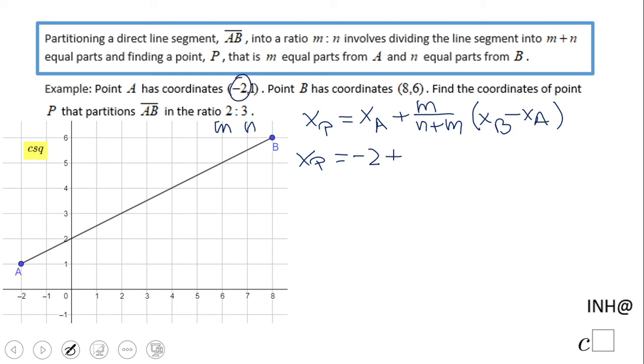So let's see what we get. XP equals XA is -2, plus—this one—M is 2 over 2 plus N, which is 5. Then we have XB which is 8, and XA which is, remember, -2. Let's do the math here. 8 minus -2 is 10. And 5 goes in 2 times, so we end up here -2 plus 2 times 2, which is 4, and that will be positive 2. Remember, at that point, the point was right here. X is 2.